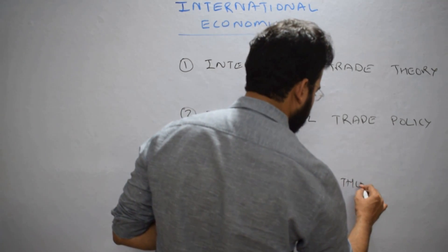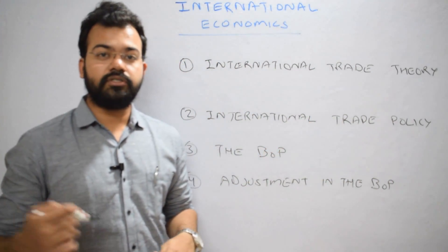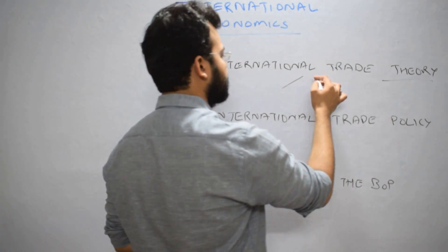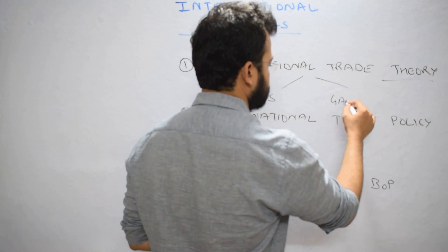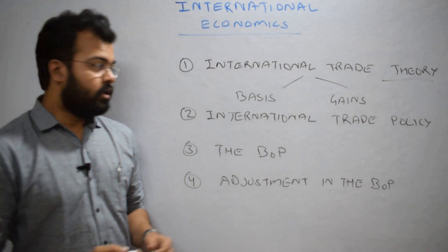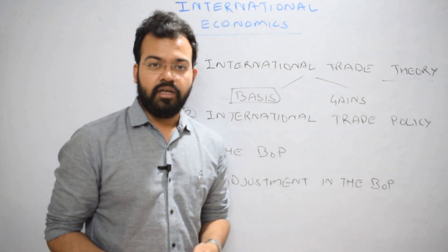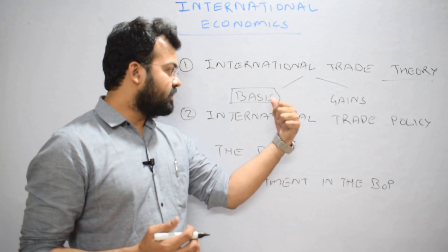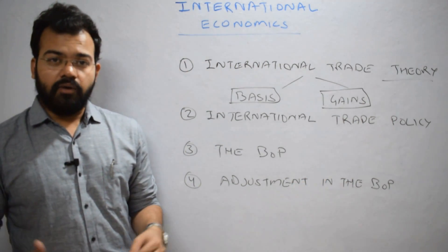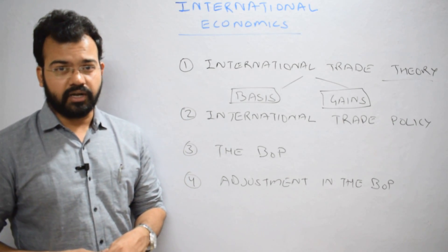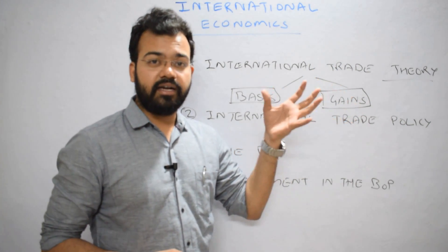In international trade theory, the most important keyword is 'theory.' We have two dimensions under it: first, basis of trade, and second, gains from trade. Basis of trade deals with the theoretical aspect — how international trade operates, including theories of absolute advantage and comparative advantage. Gains from trade refers to whatever gains we achieve from the specialization of a particular product by a particular country, driven by direct consumption after specialization.